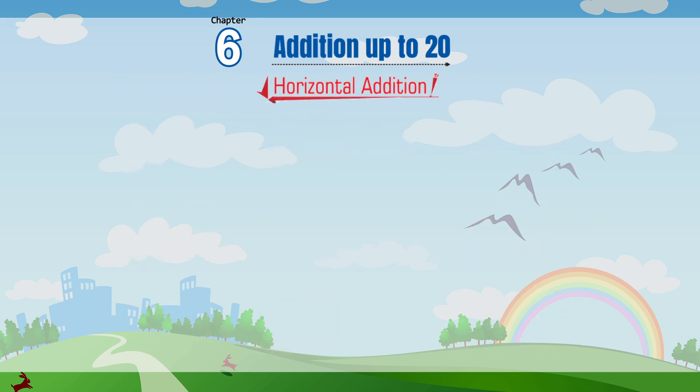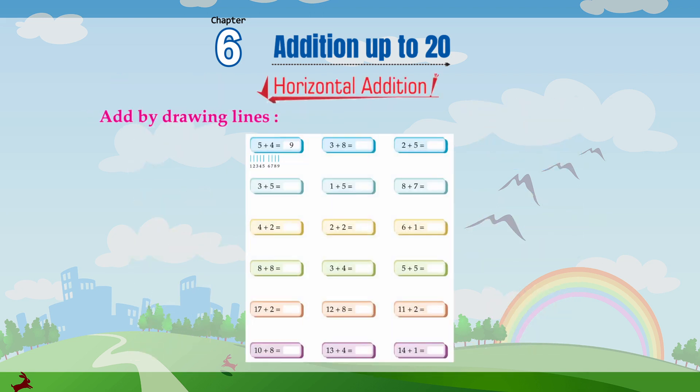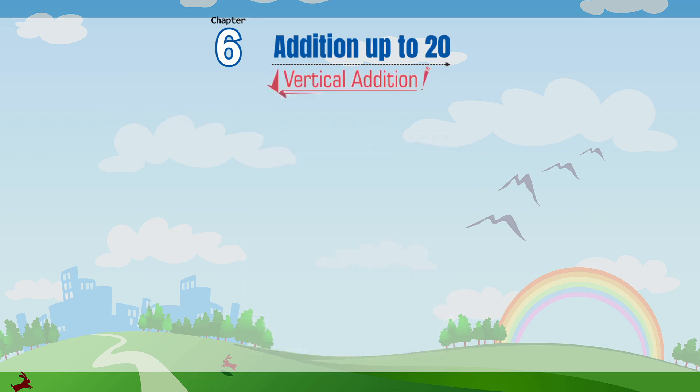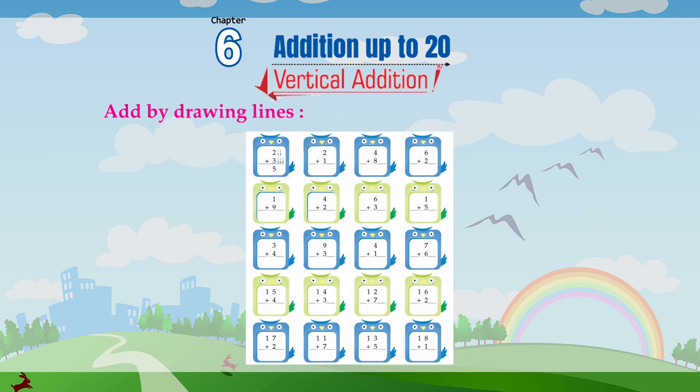Horizontal addition: add by drawing lines. Vertical addition: add by drawing lines.